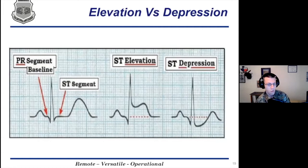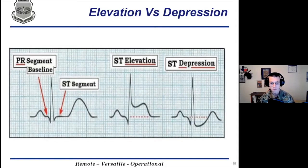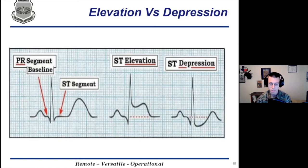Here we have a graph showing elevation versus depression. You take the J point and measure it — if it's greater than one millimeter above the isoelectric line, it's considered ST elevation. If the J point is below the isoelectric line, you have ST depression. ST depression is typically ischemia, though sometimes it can be reciprocal changes from leads showing opposite changes from ST elevation when you're looking at the opposite portion of the heart.